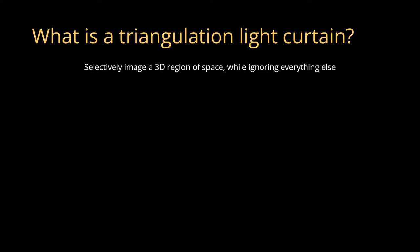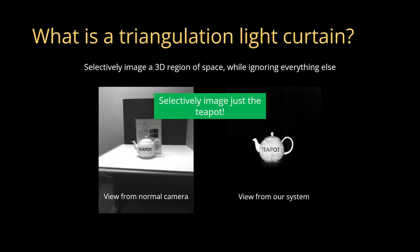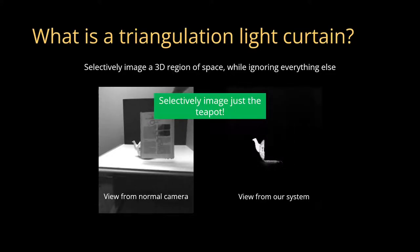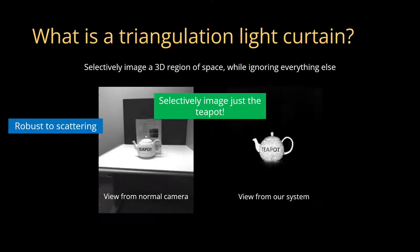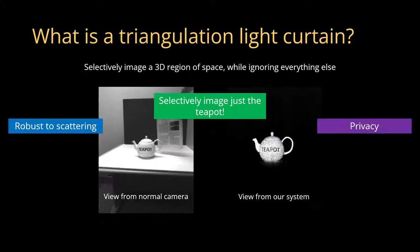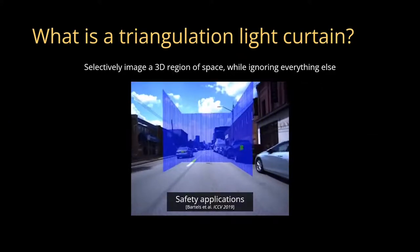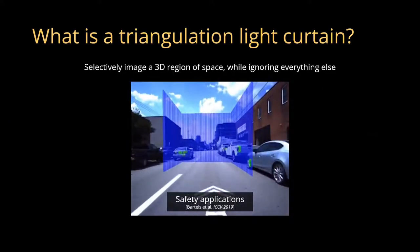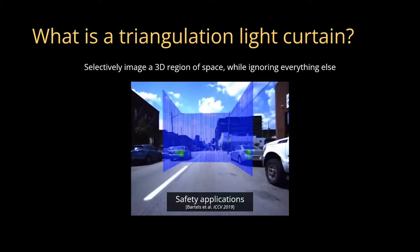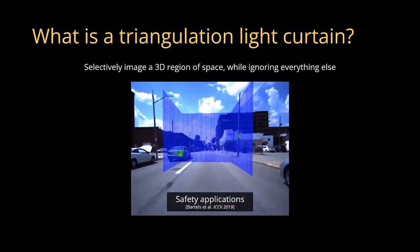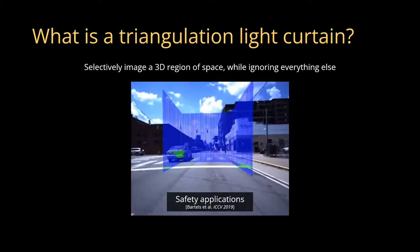To illustrate this idea, we can use the system developed in our work and selectively image just the surface of a teapot, resulting in images where the light from every other part of the scene is optically blocked. These light curtains are robust to scattering and offer a level of privacy completely optically, making them a powerful tool in the real world. For example, such devices are being explored in the context of autonomous driving for collision avoidance, to identify when objects get too close for comfort.